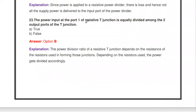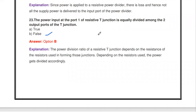Next question: the power input at port 1 of a resistive T-junction is equally divided among the two output ports — true or false? It is false. The output power at port 2 and port 3 are not equal. The power division ratio of a resistive T-junction depends on the resistance values connected at those junctions.